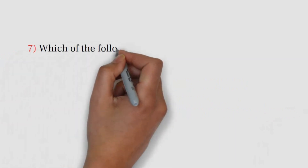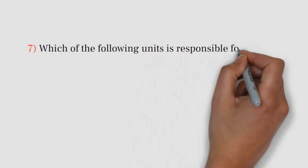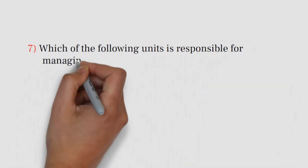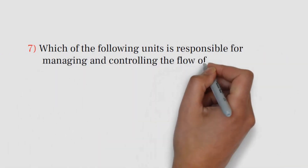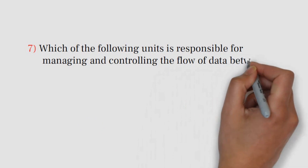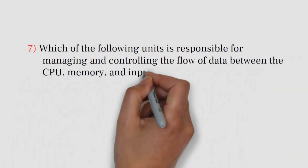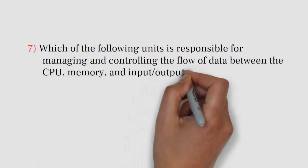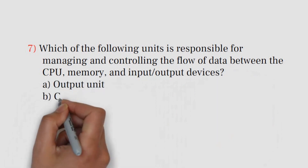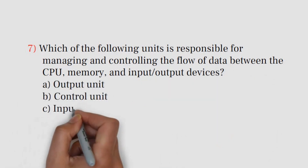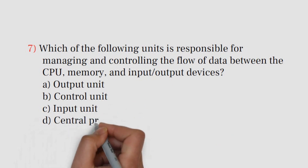Question number 7. Which of the following units is responsible for managing and controlling the flow of data between the CPU, memory, and input/output devices? A. Output unit. B. Control unit. C. Input unit. D. Central processing unit.